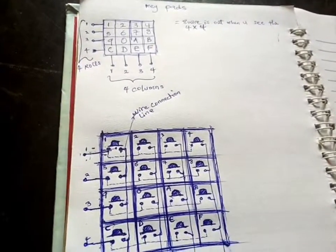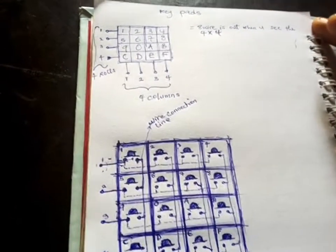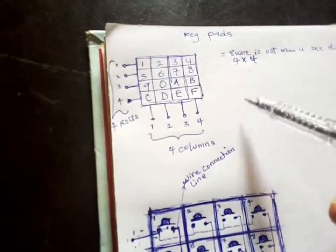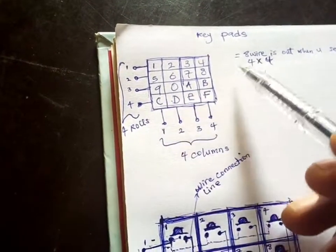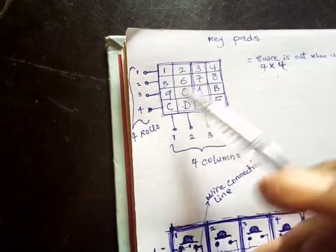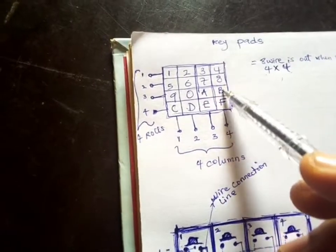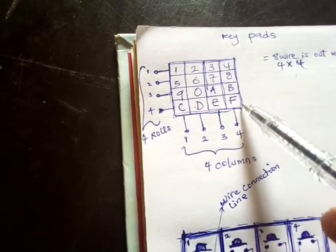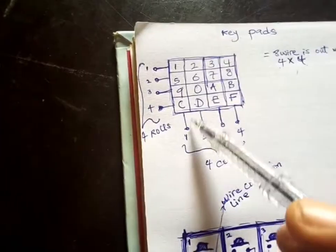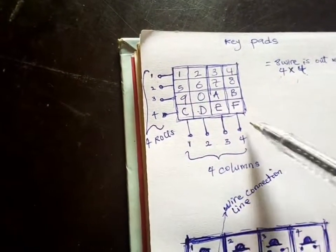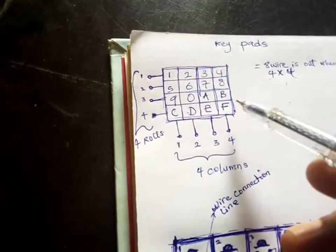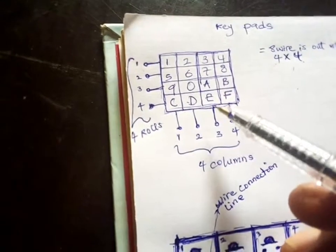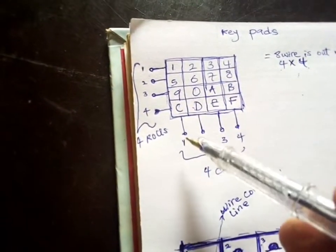Today we are going to talk about keypads and how to interface them. We have different kinds of keypads — this one is 4x4. What 4x4 means is that there are 4 columns and 4 rows, so that's why it's called 4x4. They also have 3x3 and 2x2 — it depends on the one you want. But this one is 4x4.